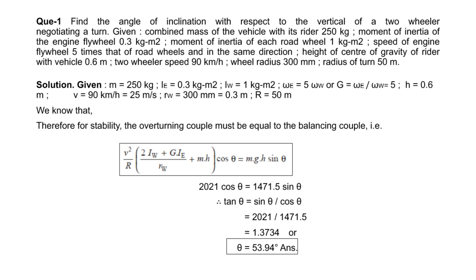This type of problem is straightforward — simply remember the formula: overturning couple equals balancing couple, substitute the given values, and get the answer directly. Thanks for watching. In the next video we will study some important MCQs for GATE and other competitive exam preparation based on this gyroscope topic.